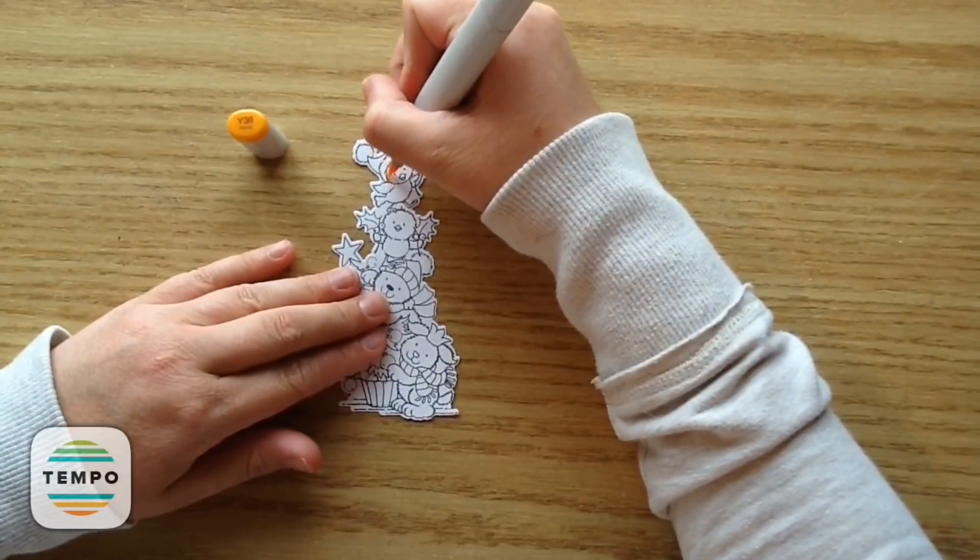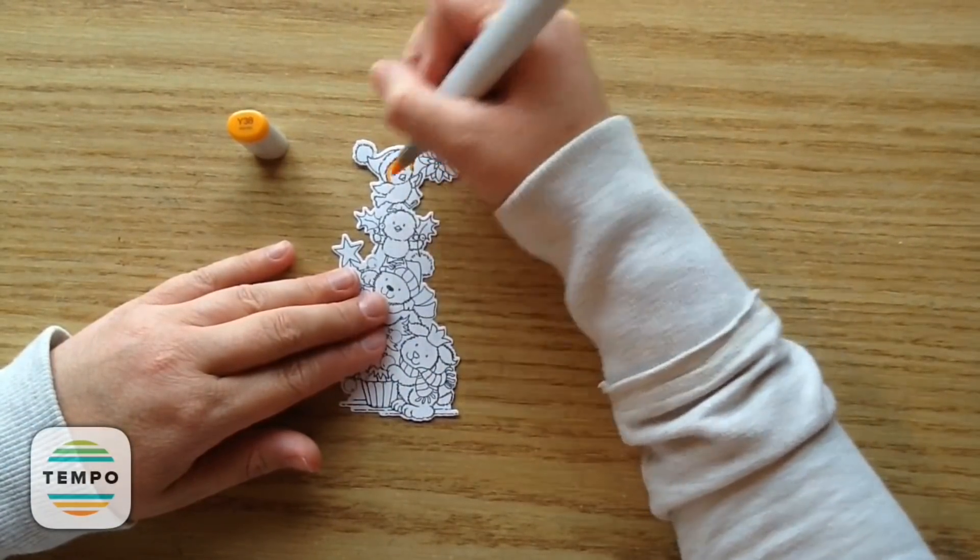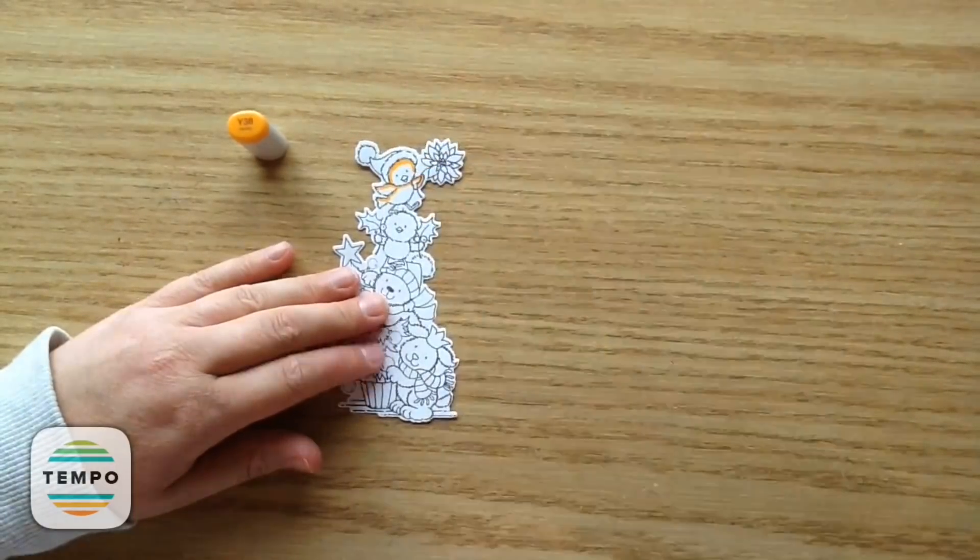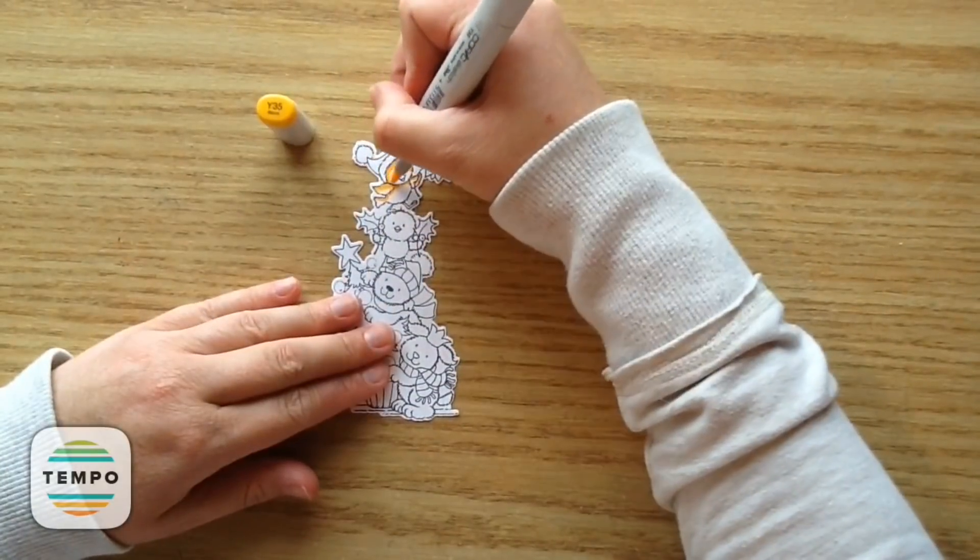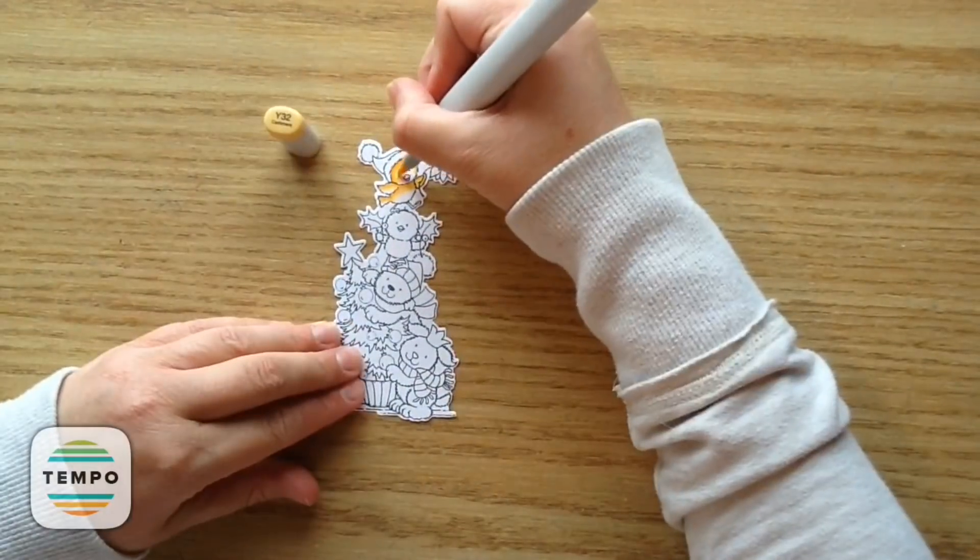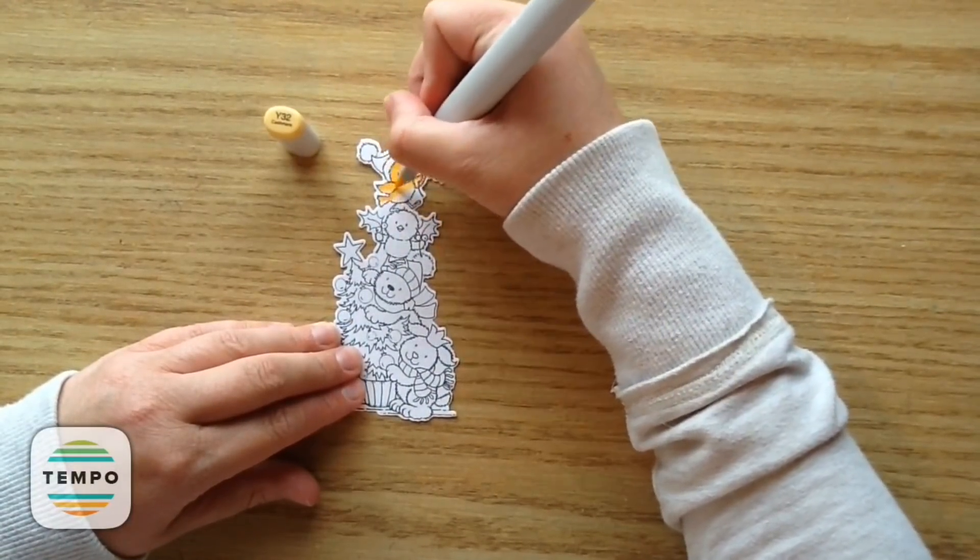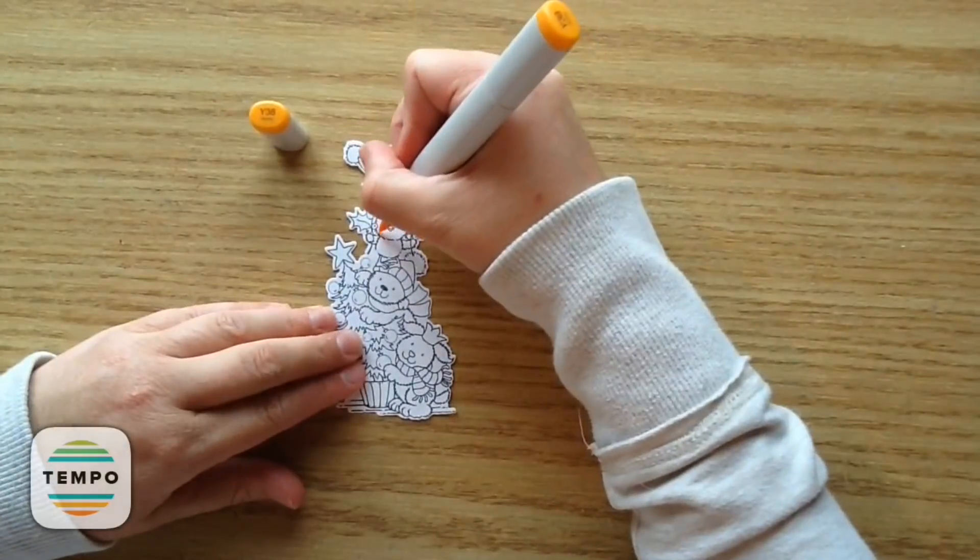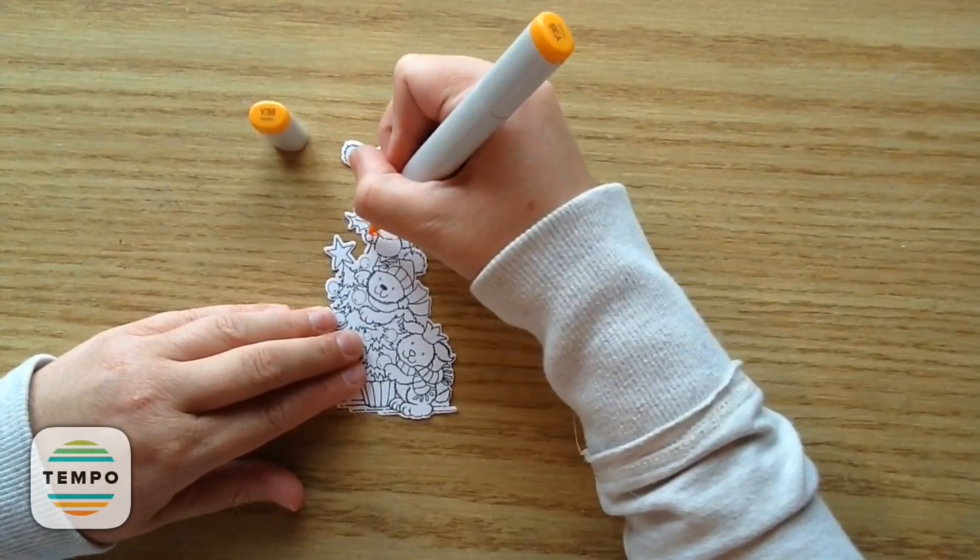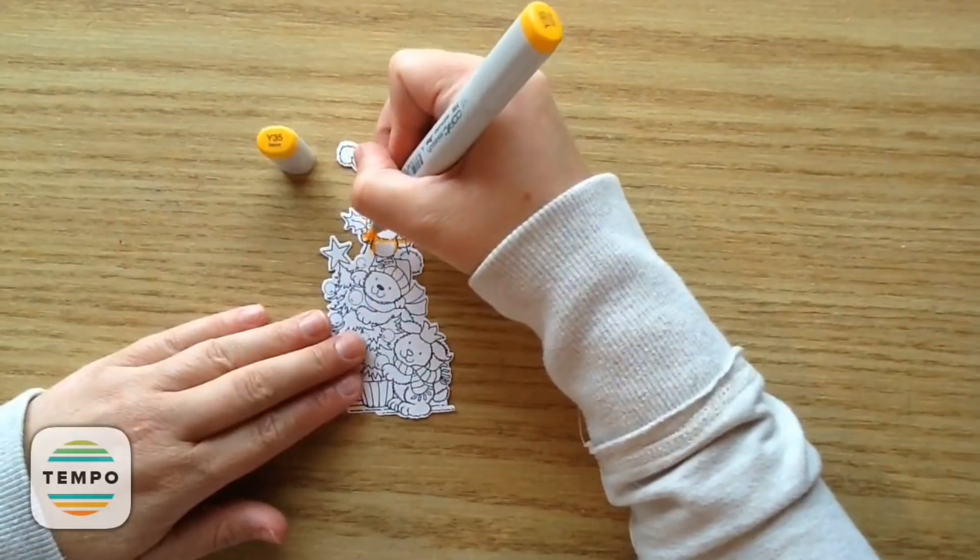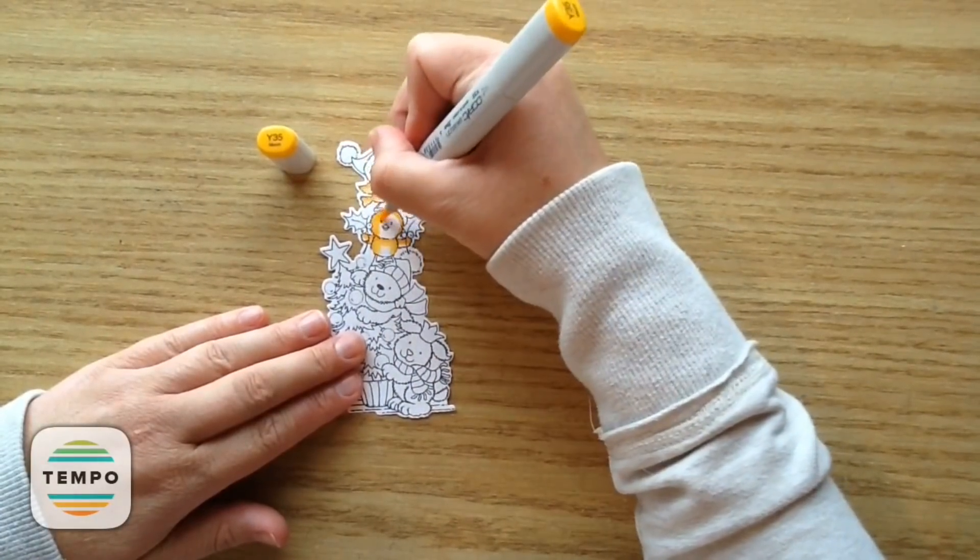And now I'm going to get into the coloring. I'm using Copic markers and I'm starting out with Y38. I love this color for chicks. It just looks like a cute, fluffy, yellowy color. And I'm blending that out with Y35 and Y32. And then I'm going to do the other chick with the same colors, Y38, Y35, and Y32.